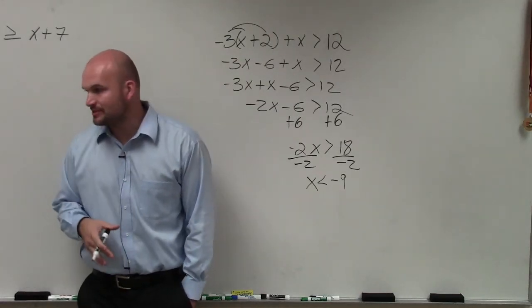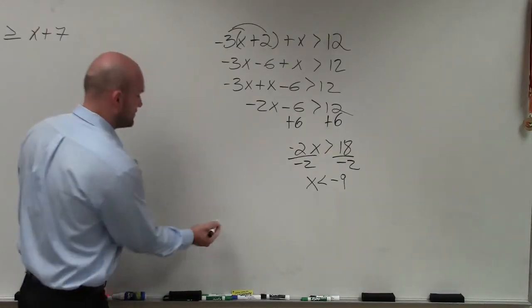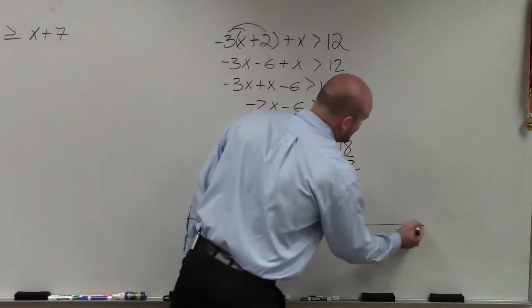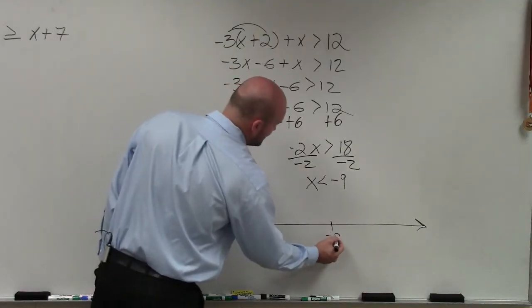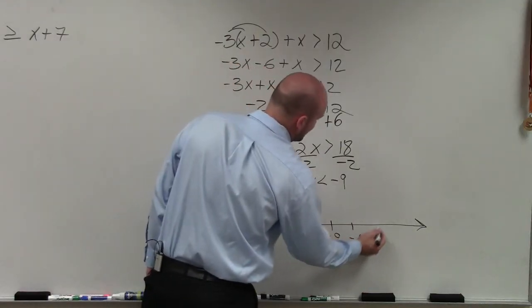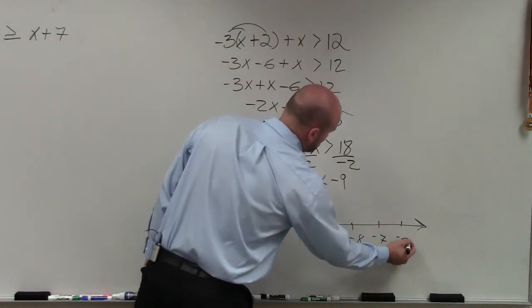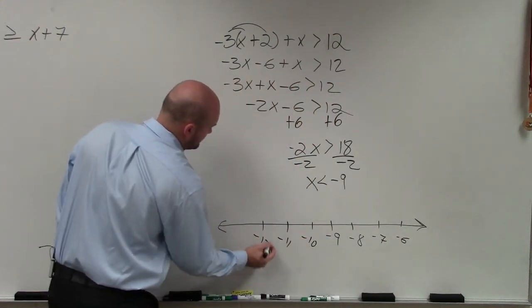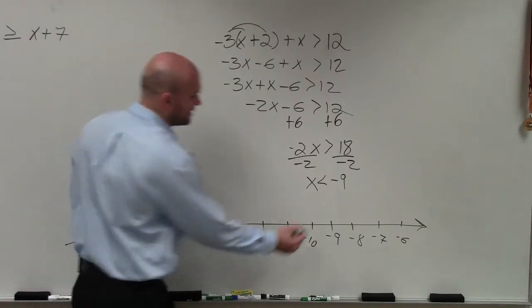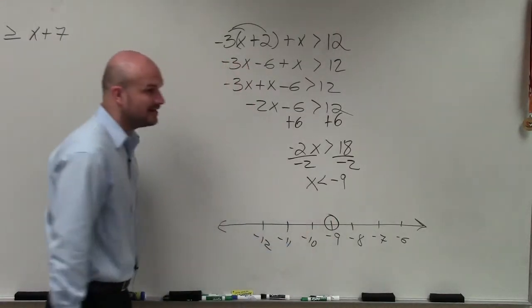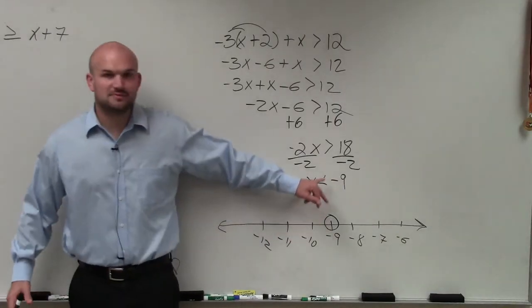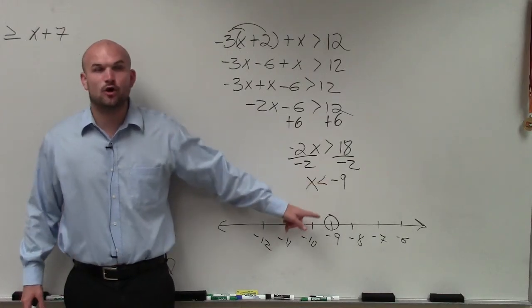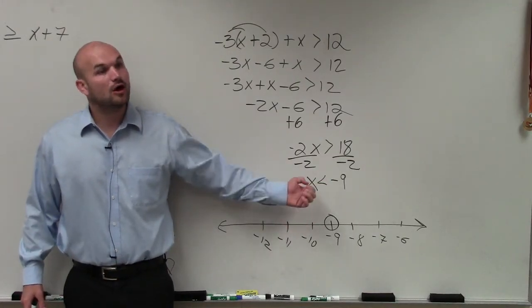Then for last class period, what we talked about was how to graph. So what I'll do in this case is I will start at negative 9. I'll make some points to the right, and I'll make a nice big circle at negative 9. From what we did last class period, does everybody remember when it's less than or greater than? Is that an open or a closed point? Open. So we're not going to keep that shaded.